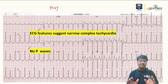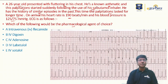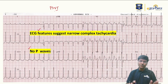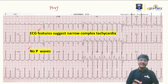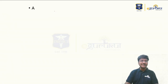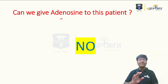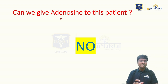Diagnosing this ECG is not difficult, but the challenge is what drug to give this patient, who is an asthmatic. The first-line management is vagal maneuvers, and the first-line drug is adenosine. However, can we give adenosine to this patient? The answer is a big no, because adenosine's important adverse effect is that it causes transient bronchospasm, and that is why adenosine is not given in asthmatics.